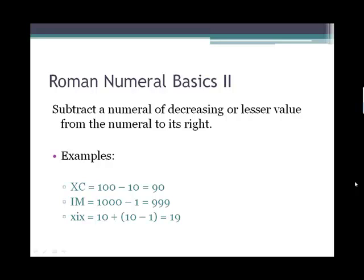When there is a smaller amount before a larger amount, like X is 10 and C is 100, and X goes right before 100, so XC is actually a subtraction. You need to take 10 away from 100, so X is 10 away from C is 100, and so that becomes 90. Another example, IM: M is 1000, I is 1, and I comes first before M, so we're going to take 1 away from 1000, that's 999.